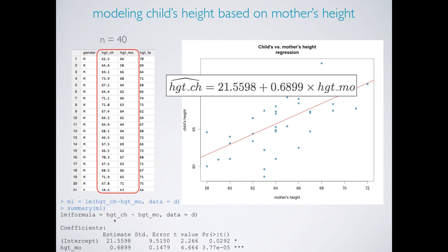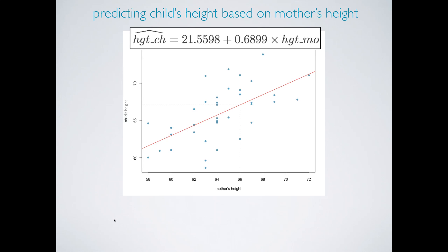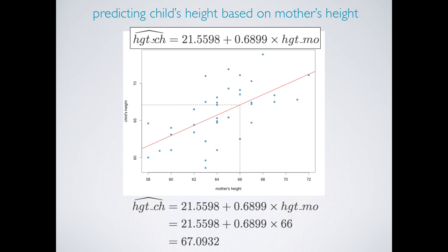Using this linear model, we can also do prediction. Say we want to obtain the height of a child if the mother's height is 66 inches. All we need to do is draw a vertical line towards our line at the mother's height of 66 inches and figure out the y value associated with this. Mathematically, we're plugging in 66 into the equation for the linear model and solving for the child's height. That gives us roughly about 67.1 inches.